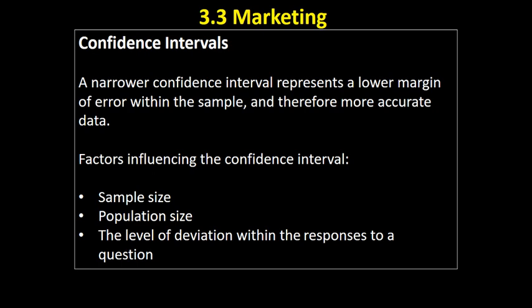The final factor is the level of deviation within responses to a question. If 98% of your sample say yes to a question, you can be relatively confident that result is representative. However, if responses are closer to the middle — say 49% picking a particular response — you'll have a wider confidence interval because there's a lot of deviation within that answer.